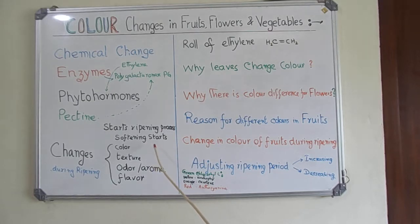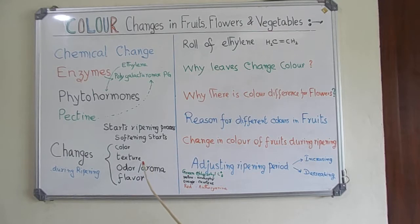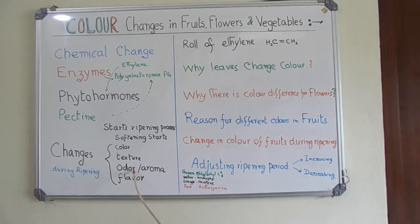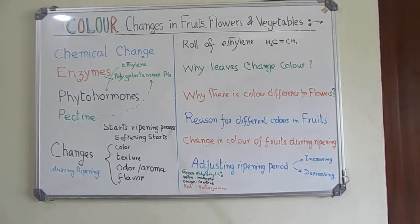Color of the fruit, flower, vegetable, or leaves changes. Texture — hardness, softness — changes. The smell, aroma, or odor changes. Flavor also changes automatically. Now, what is the role of ethylene? We will discuss.